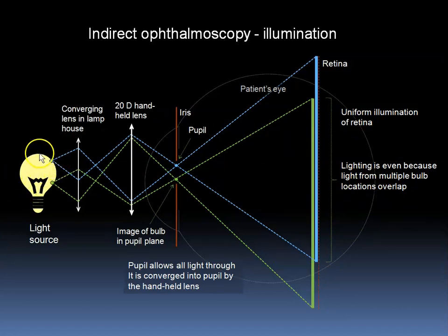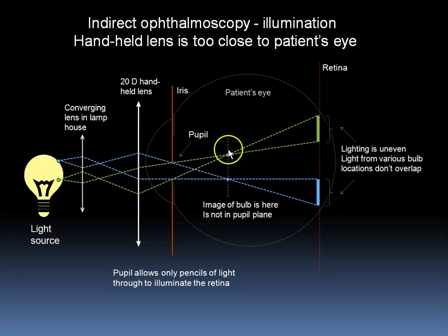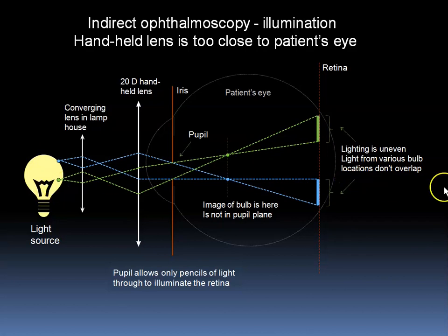The bulb has a physical size and light comes off the different parts of it. Here we see what happens if the position of the lenses in the system are such that the image of the object points on the bulb of the illuminating device are not located in the pupil, but located further in this direction. We see in this example that smaller areas of the retina are illuminated, and they are non-overlapping. The lighting will be poor and uneven because the lighting from the various bulb locations do not overlap.